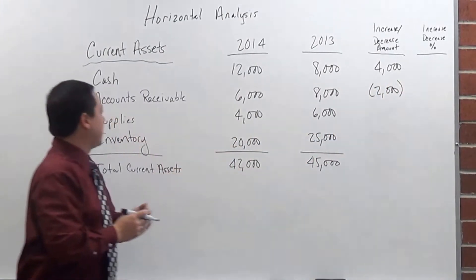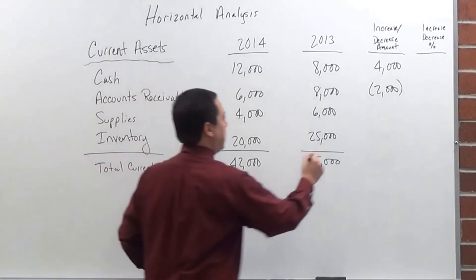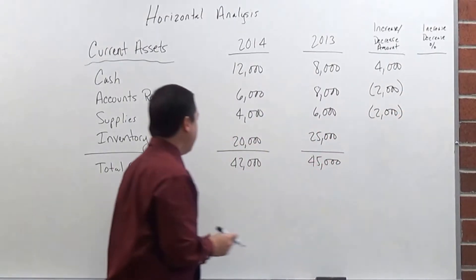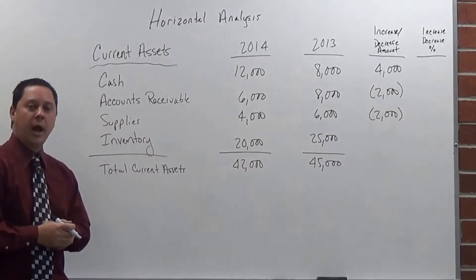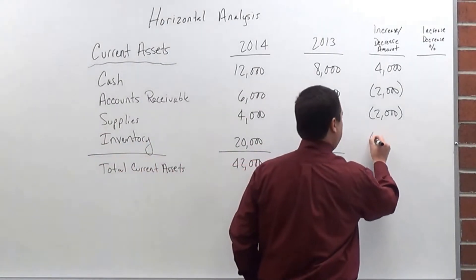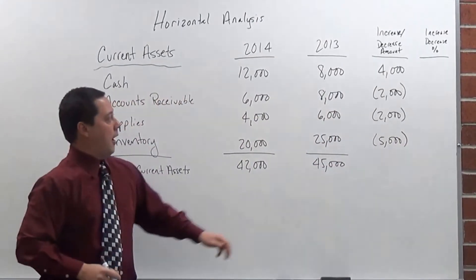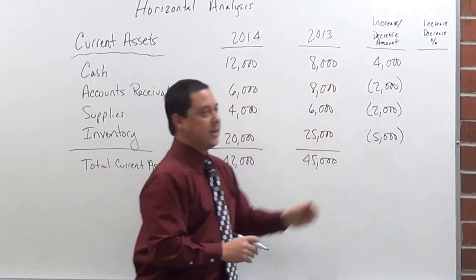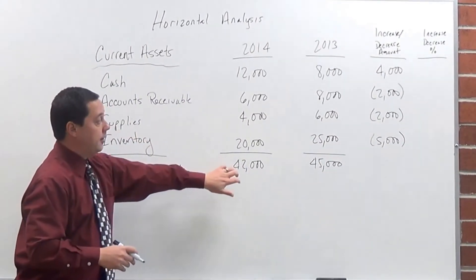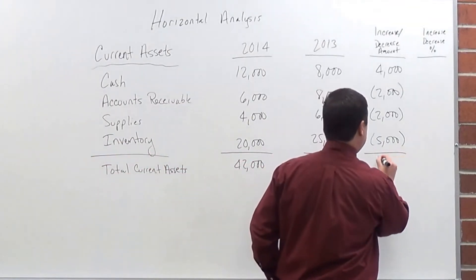And then in my supplies, I went from $6,000 in 2013 to $4,000 in 2014, so I again had a $2,000 decrease. And then finally, in my inventory here, I went from $25,000 down to $20,000, which is a $5,000 decrease. So I had one increase and three decreases there. Now my total current assets was $45,000 in 2013, then it went to $42,000. So I had a $3,000 decrease.